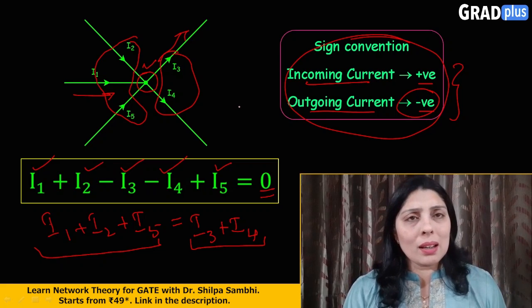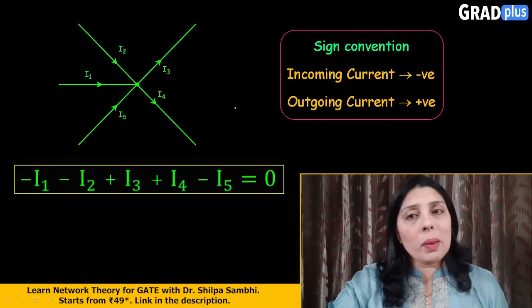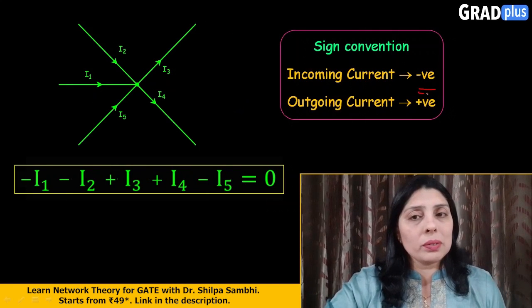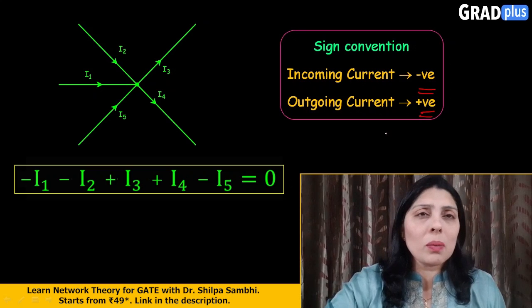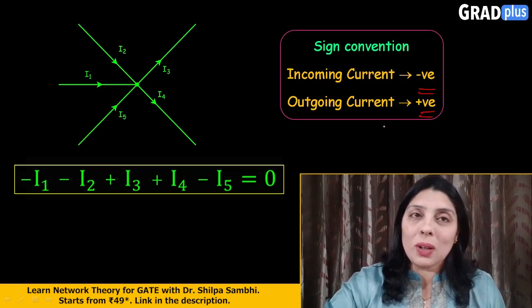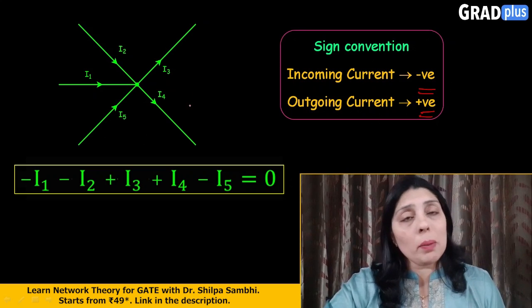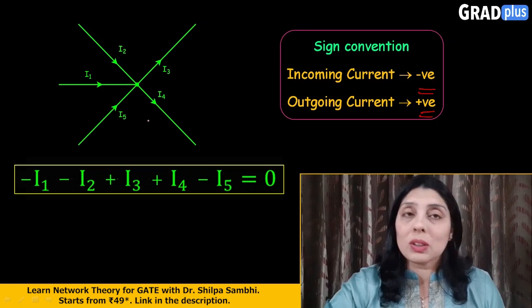What if I change my sign convention? Means if I make my incoming current to be negative and my outgoing current to be positive, what will happen? Will I be getting the same answers? Let's try to understand this. So again I have taken the same circuit with the same direction of currents which we have just taken.